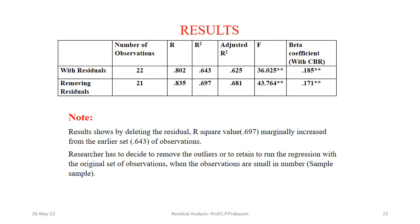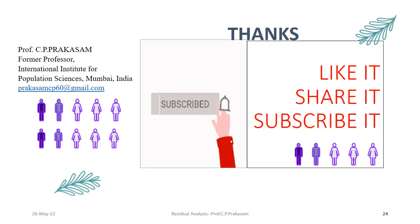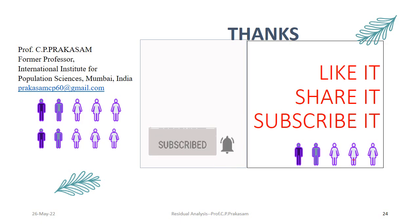Therefore, the researcher has to decide whether to remove the outlier or retain it in the regression equation. That is a major decision, because when the observations are very small and you delete the outliers, the sample size becomes still smaller. In that case, a researcher should consider that when the observations are very large, it is possible to delete the outliers and recalculate the R-square values. Thank you very much. Please like it and share it.